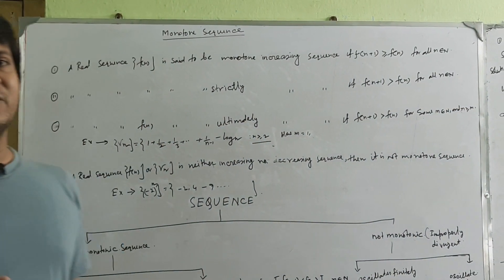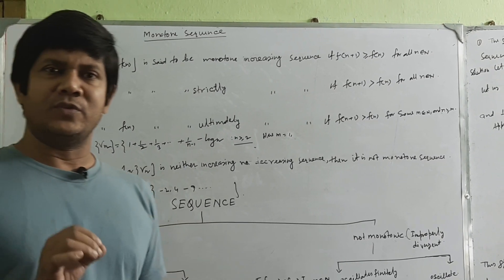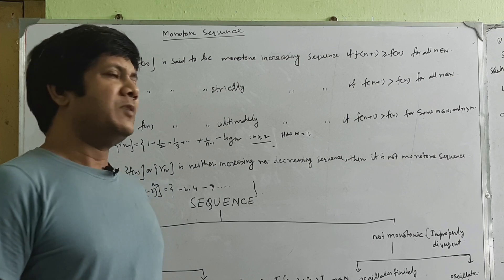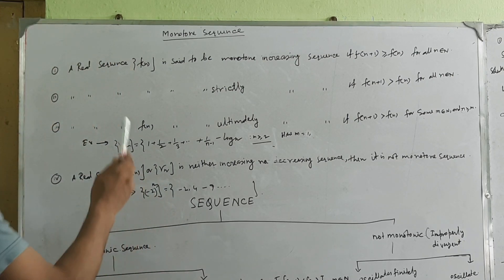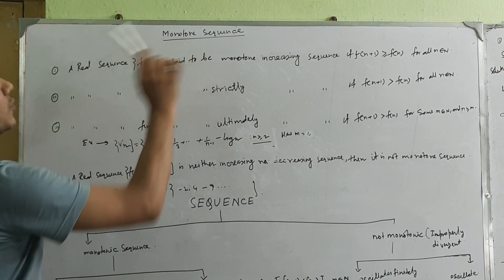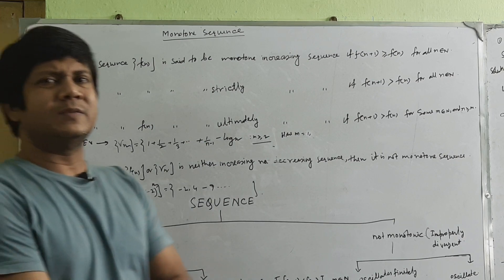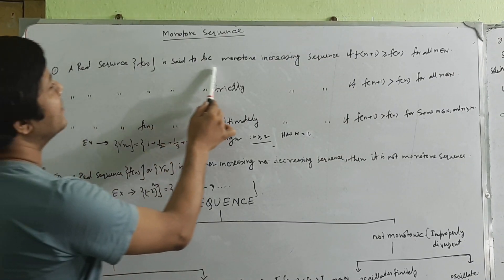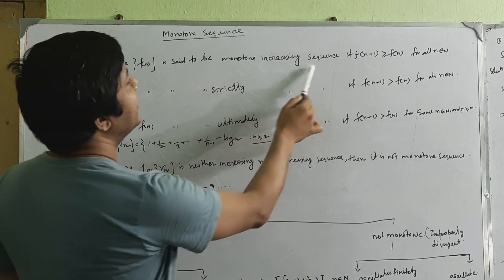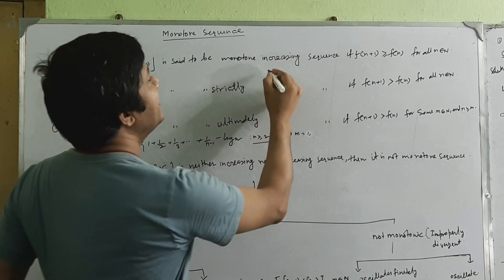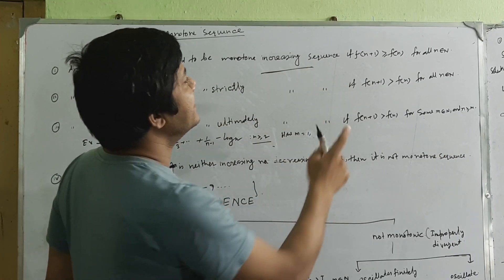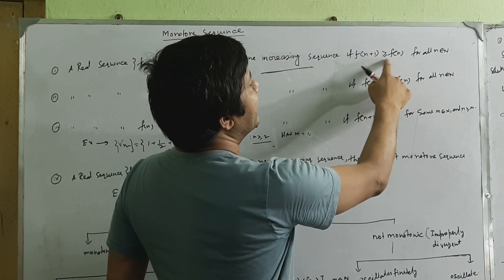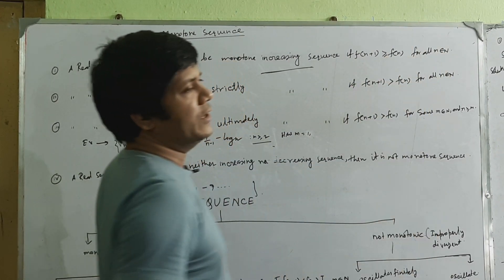This sequence is shown for the first time. I will follow this again and head to this monotonic sequence. I will give a definition: a real sequence f(n) is said to be a monotonic increasing sequence if f(n+1) is greater than or equal to f(n) for all n belonging to the natural numbers.